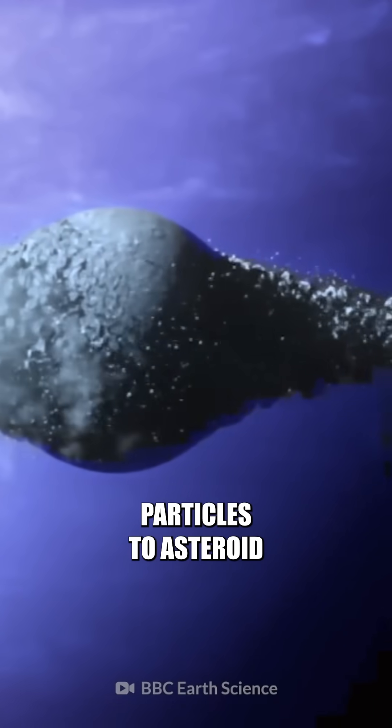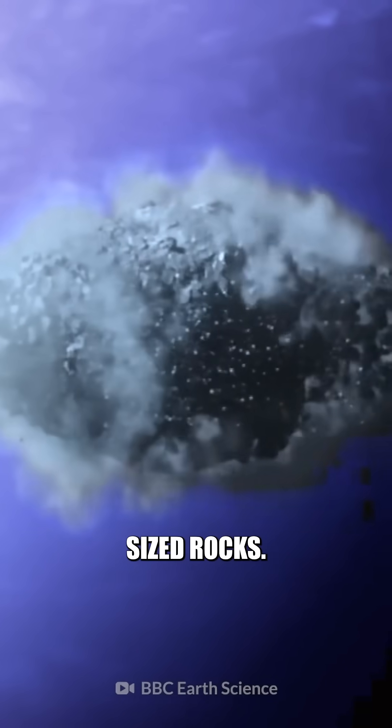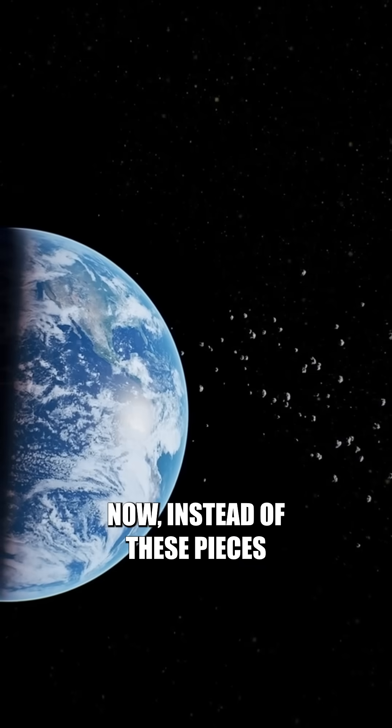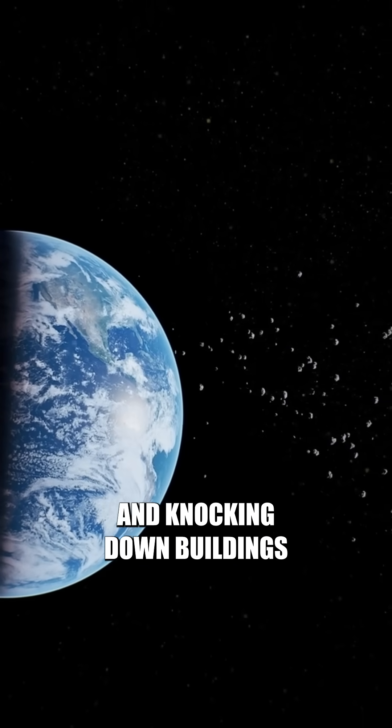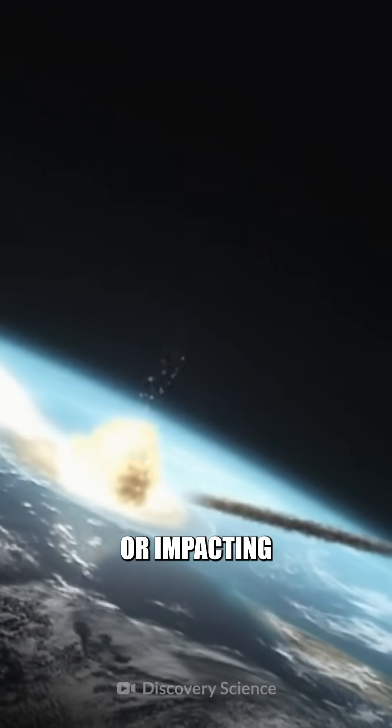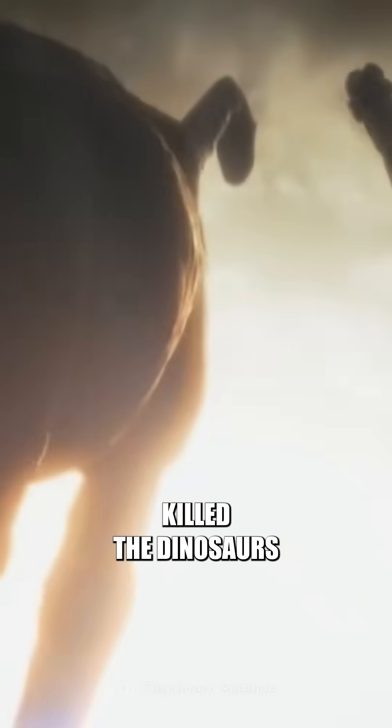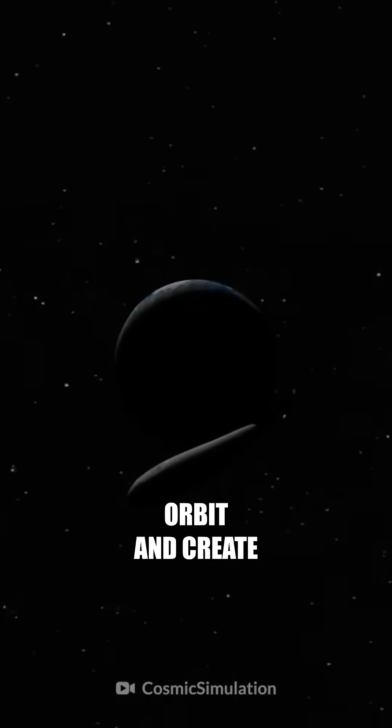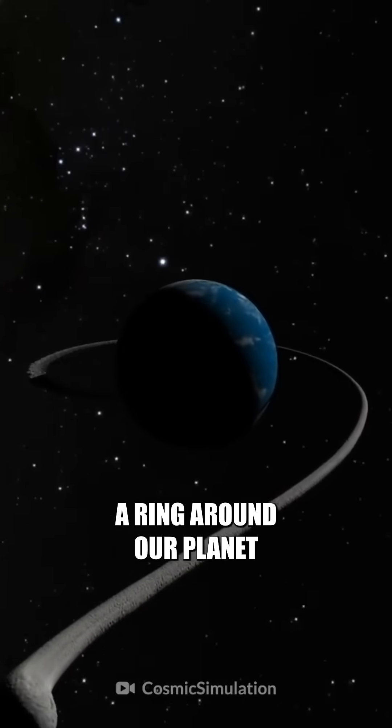Ranging from tiny dust particles to asteroid-sized rocks. Now, instead of these pieces falling down to Earth and knocking down buildings or impacting the ground like the asteroid that killed the dinosaurs, they would continue to orbit and create a ring around our planet.